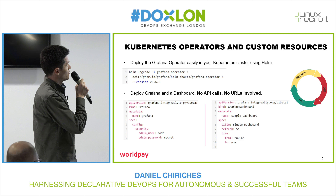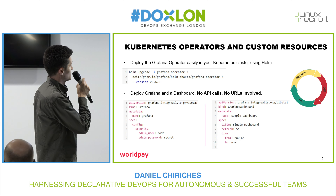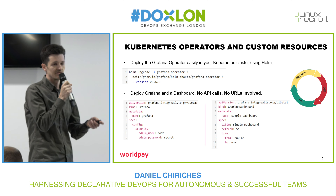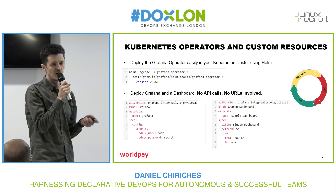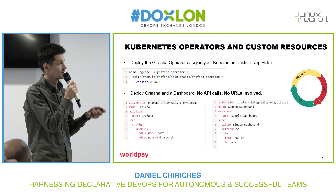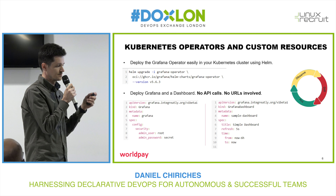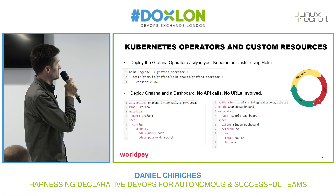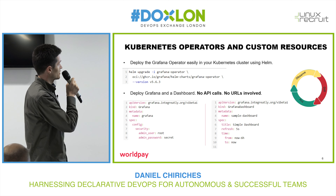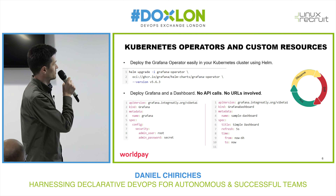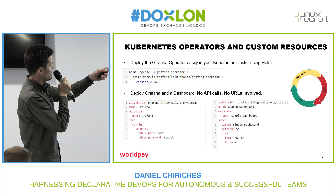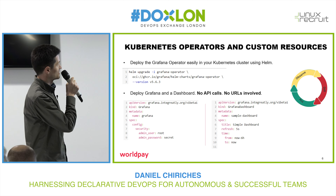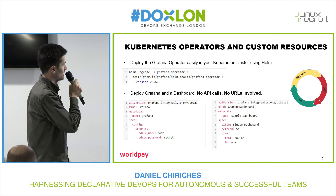How would you deploy such an operator? There are many options — you could use anything that can handle Kubernetes manifests because in essence it's just YAMLs. We are using Helm; it could have been Ansible, kubectl, or a bash script. But Helm is another declarative powerful tool — it's a one-liner to get the operator installed in the Kubernetes cluster, and then we can jump to actually creating the objects.